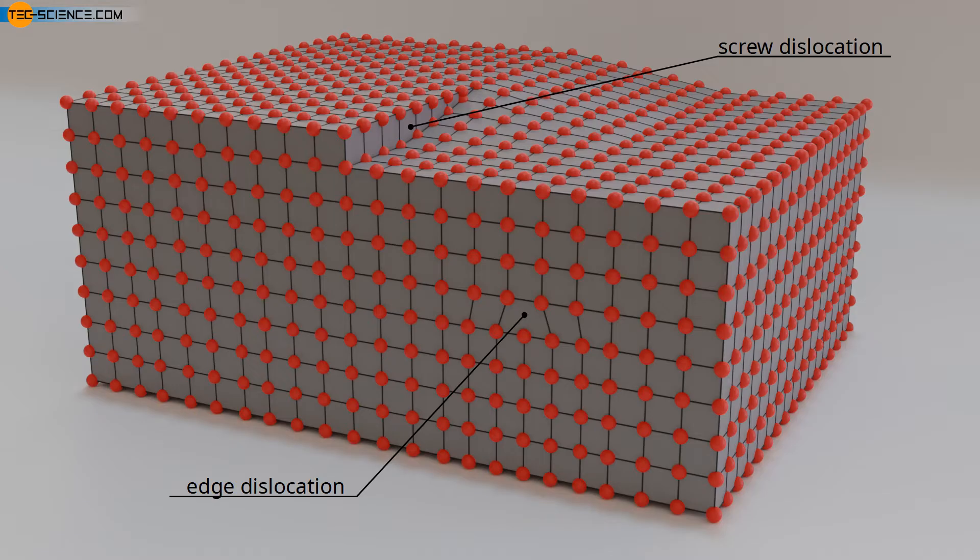Dislocations form when the melt solidifies or when there are stresses in the metal. However, they can also be introduced by plastic deformation. This principle is used, for example, in strain hardening. Dislocations play a central role, especially in deformation processes, as they are largely responsible for the good formability of metals. We will go into more detail in another video.